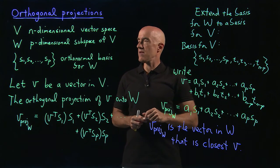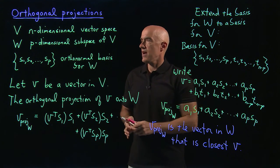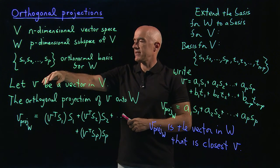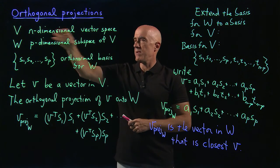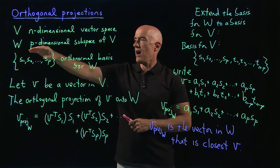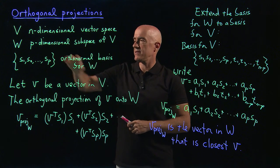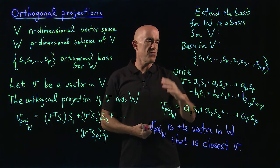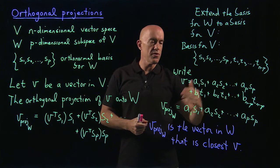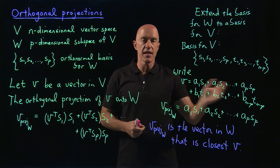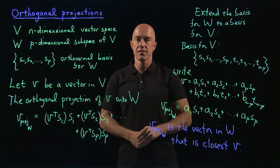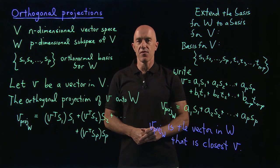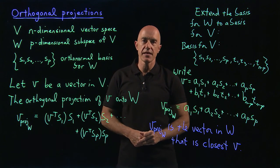Let me summarize. An orthogonal projection is a way of projecting a vector in a bigger vector space onto a subspace of that vector space. Basically, you throw away all the piece of that vector that is not in the subspace. I'm Jeff Chasnov. Thanks for watching, and I'll see you in the next video.